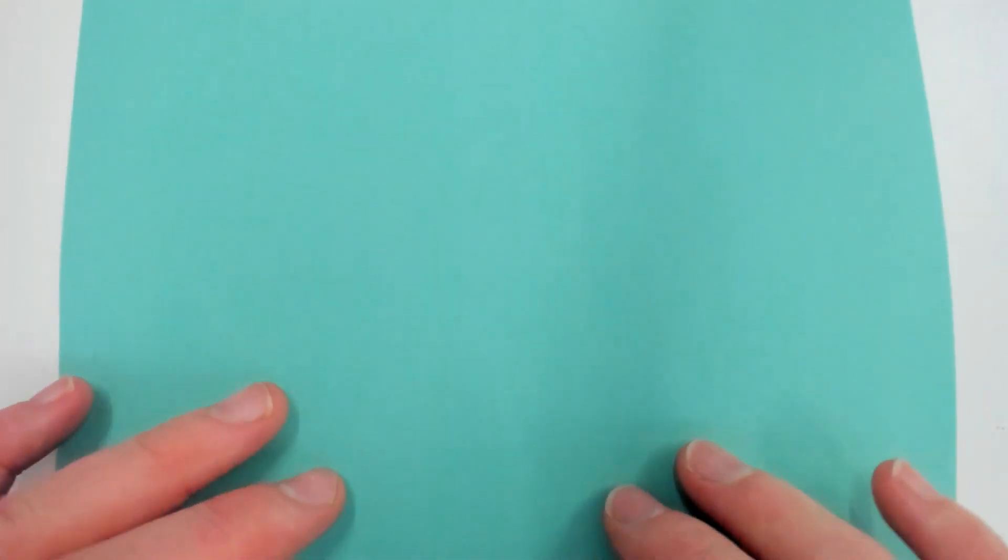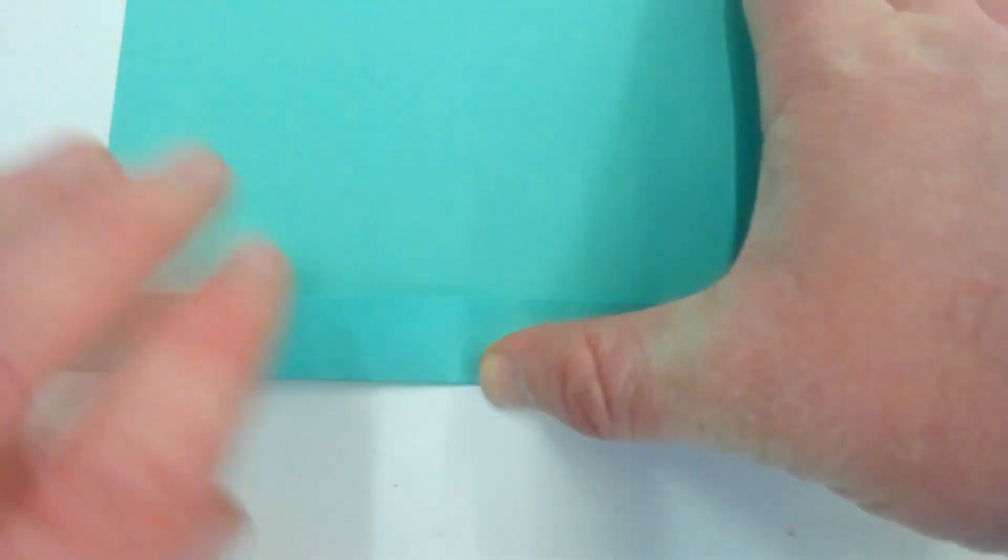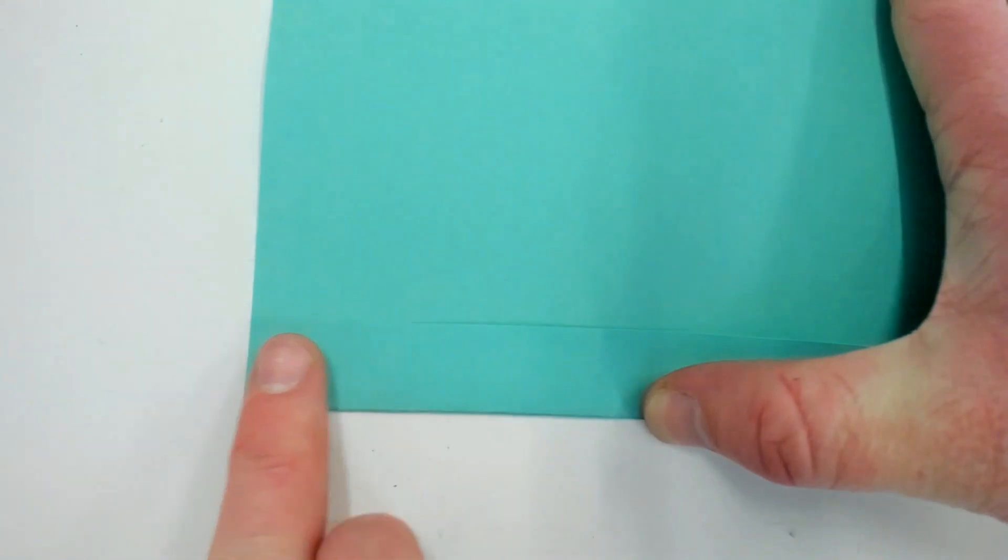So remember, fold it up, find your line. Then you want to push down on that center bit, go to the edge, make sure they're lined up, and then flatten it out to the other side.